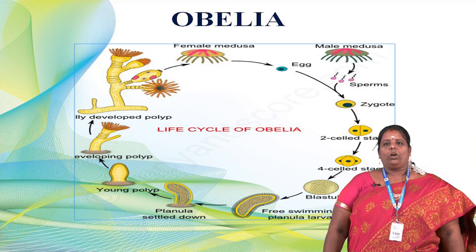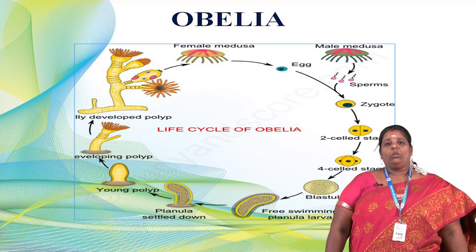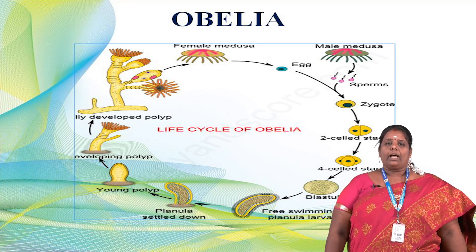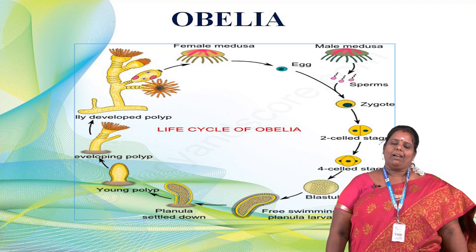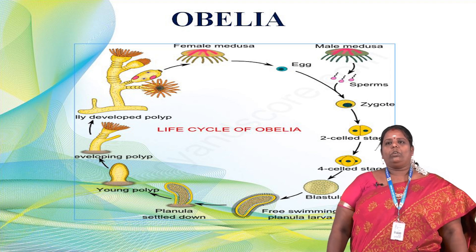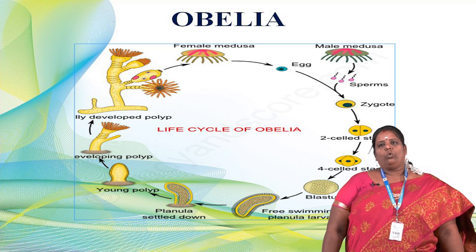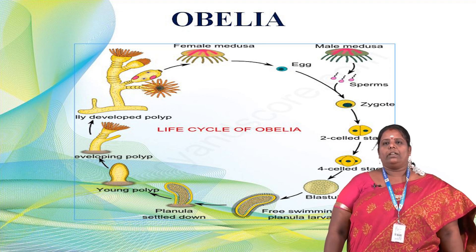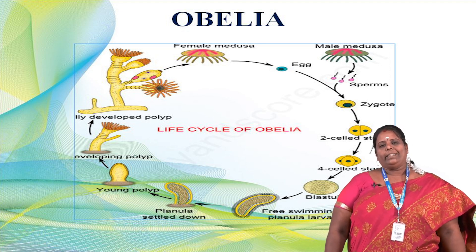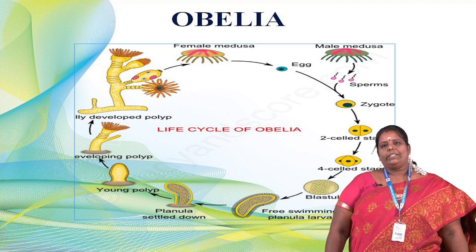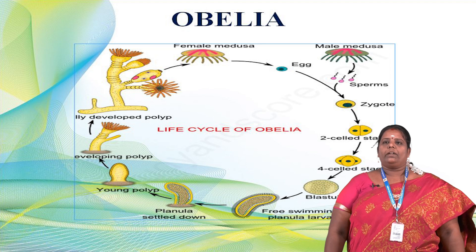This is the life cycle of Obelia. First we have to know about this life cycle — how the animal is developed. So first I will introduce the life cycle of Obelia. You have to know about the structure of Obelia, including the external structure. It has medusae and another form called polyps — both are very important.